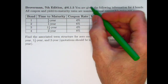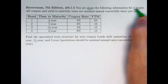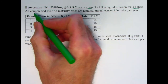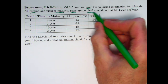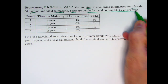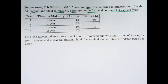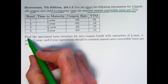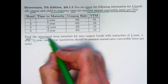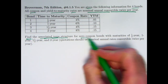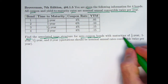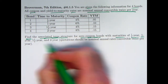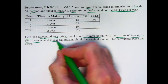We're given the following information for four bonds that do have coupons. All coupon and yield to maturity rates in these two columns are nominal annual and convertible twice per year, so you'd have to divide them by two to get the effective semi-annual rates. The goal, based on this information, is to find the associated term structure for zero coupon bonds — bonds that don't have any coupons, they only have a payment at the end — with maturities of one-half year, one year, one and a half years, and two years.